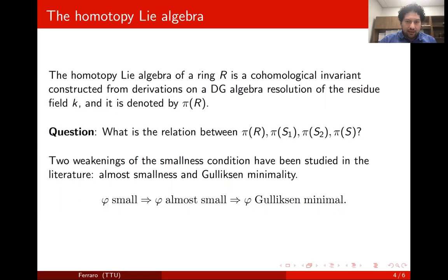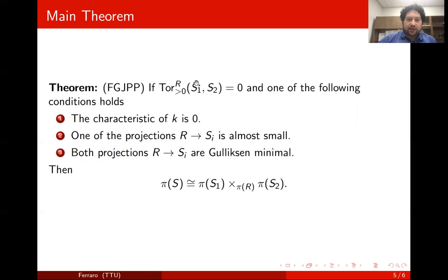Before I give the statement of our theorem, I need to give a bit of terminology. There have been two weakenings of the smallness condition that have been studied in the past: the almost smallness condition and the Golod minimality condition. They are weakenings in the sense that if a map is small, then it is almost small, and if a map is almost small, then it is Golod minimal. Our main theorem states that if S₁ and S₂ are Tor-independent, and if one of three conditions is satisfied — either the characteristic of K is zero, or one of these projections is almost small, or both projections are Golod minimal — then one has an isomorphism of homotopy Lie algebras. Specifically, the homotopy Lie algebra of S is the fiber product, or pullback, of the homotopy Lie algebras of S₁ and S₂ over the homotopy Lie algebra of R.